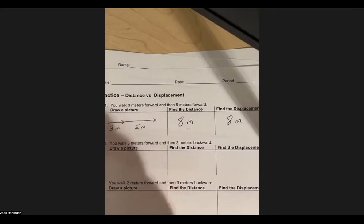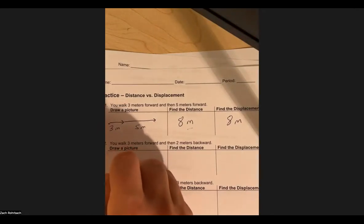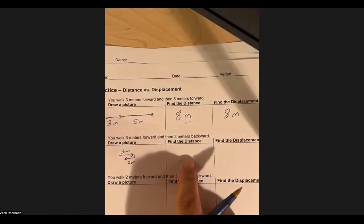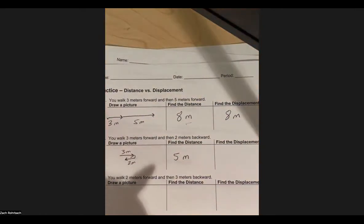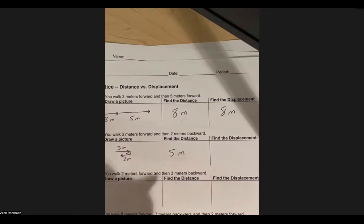Let's try another one. You walk three meters forward and then two meters backward. I draw a forward arrow for three meters, then at the end of that, a backward arrow for two meters. What's the distance? The distance is the total amount traveled regardless of direction — three meters plus two meters is a total distance of five meters. But what's the displacement? Displacement is how far an object is from its starting point. If I started here, went three meters forward and then two meters back, how far am I from where I started? You should end up with one meter.